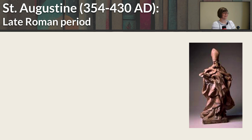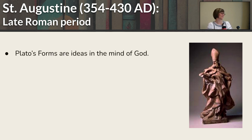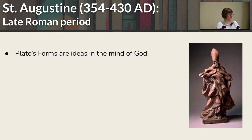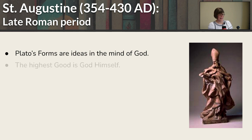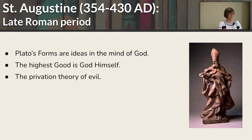Moving on in the history — this isn't a complete history, just the high points. Augustine really liked Plato, and he modified Plato's ideas using both general and special revelation. He thought Plato's forms are ideas in the mind of God — they don't exist independently. The highest good was God himself. Augustine also believed in the privation theory of evil, which most people trace back to Augustine, though it goes back further.